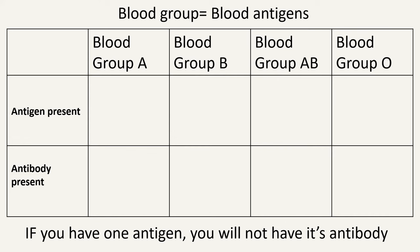Blood grouping is very simple. A person having blood group A will have antigen A, and as antigen A is a self antigen, this group will not produce antibody for antigen A. For this group, antigen B is a foreign antigen, thus they will produce antibodies against antigen B.